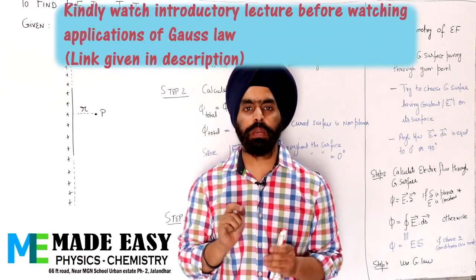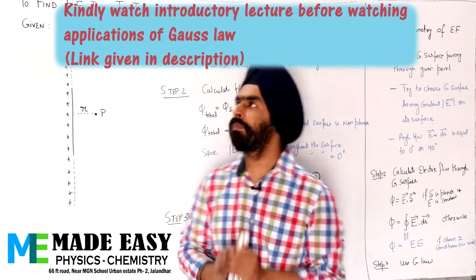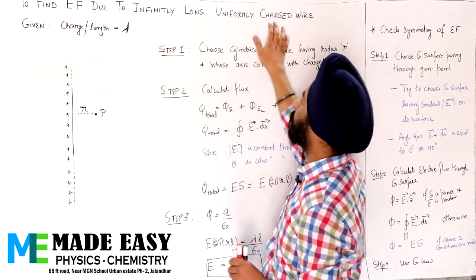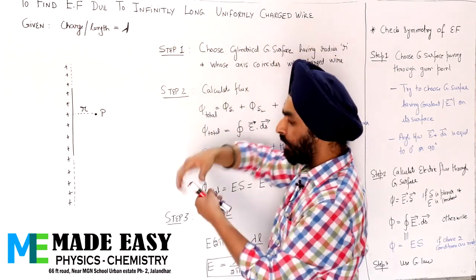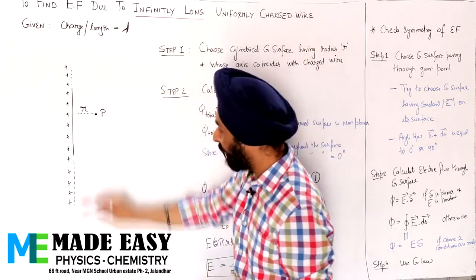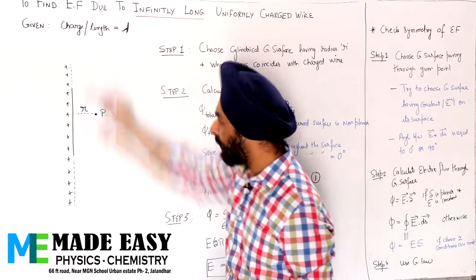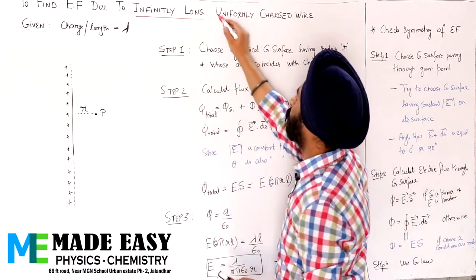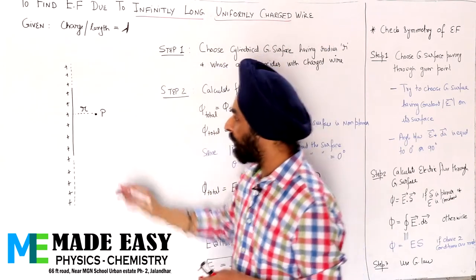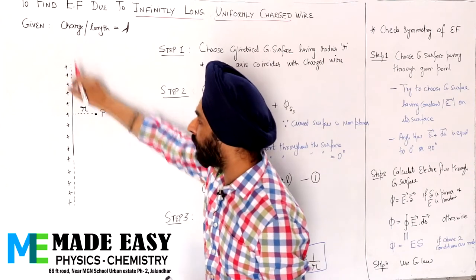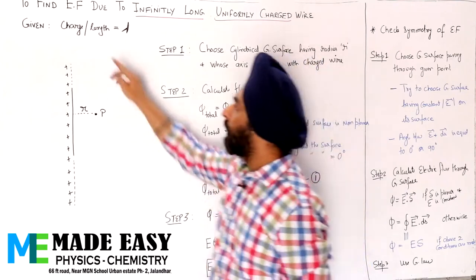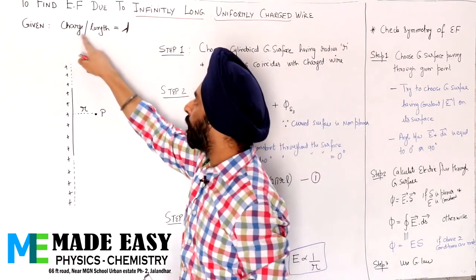Let's begin with the first application of Gauss's law: finding the electric field due to an infinitely long uniformly charged wire. The wire is infinitely long and also uniformly charged — that is, the charge distribution is uniform. It's not that charge is crowded somewhere and less somewhere else; it is uniformly distributed.